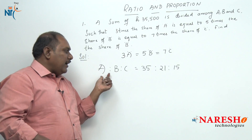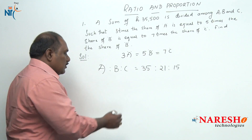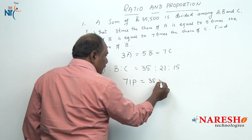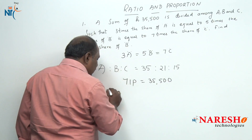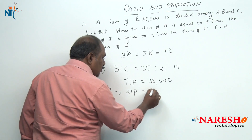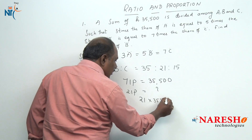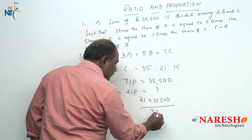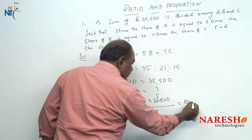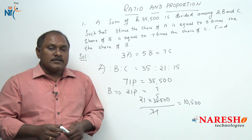So the money should be divided among A, B and C in the ratio of 35 is to 21 is to 15. The total money is divided into 71 parts, which is 35,500, and we want B's share. B's share is 21 parts. So 21 into 35,500 divided by 71. Same calculations: 21 into 500 is 10,500. This is how you can solve this type of problem.